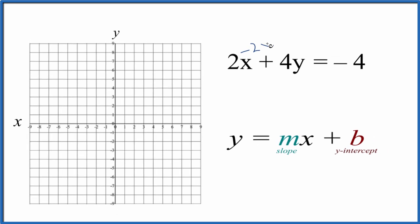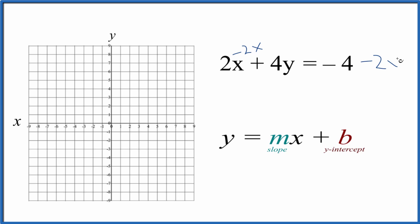Let's subtract 2x from both sides. That gives us... And let's move the x to the front, since that's the way our slope-intercept form is.